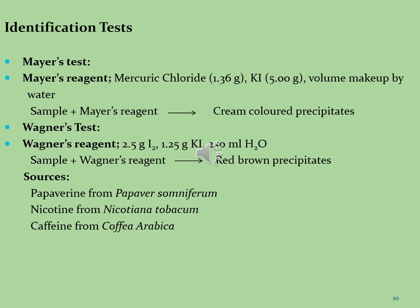The second test is Wagner's test. Wagner's reagent is prepared by taking 2.5 g of iodine and 1.25 g of potassium iodide, both dissolved in 250 mL of water. The sample is treated with a few drops of Wagner's reagent, and we get reddish-brown precipitates, which indicate the presence of alkaloid molecules.